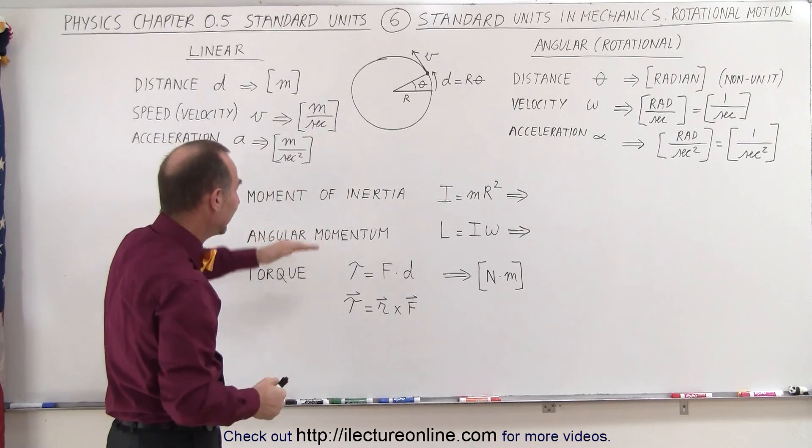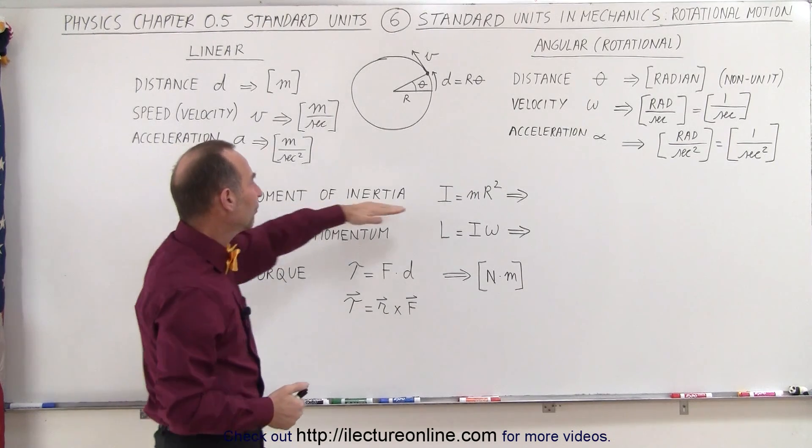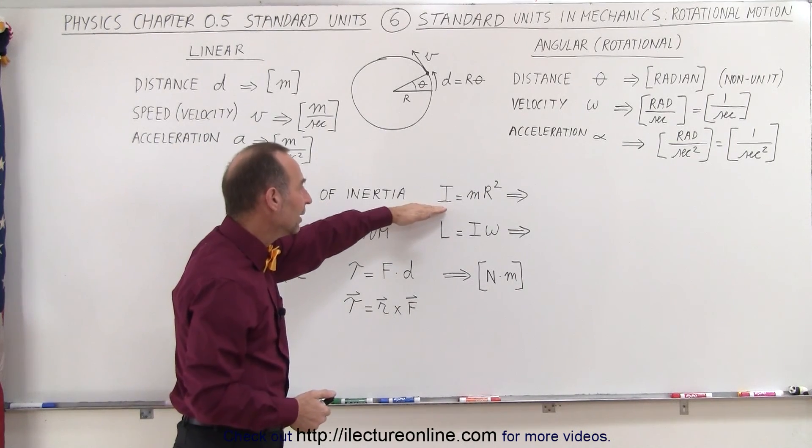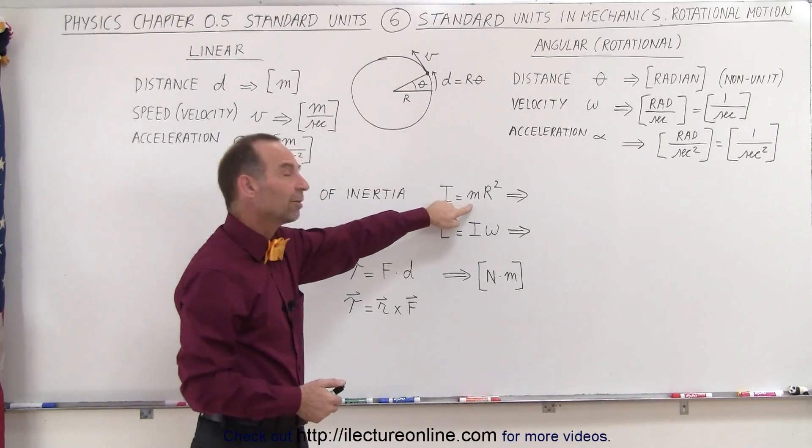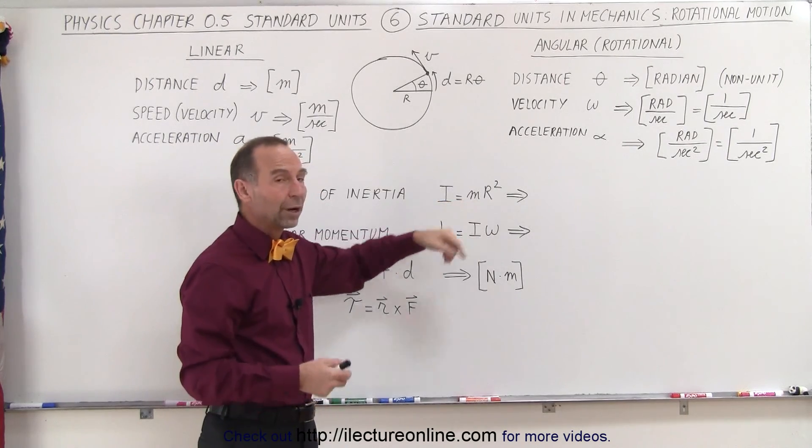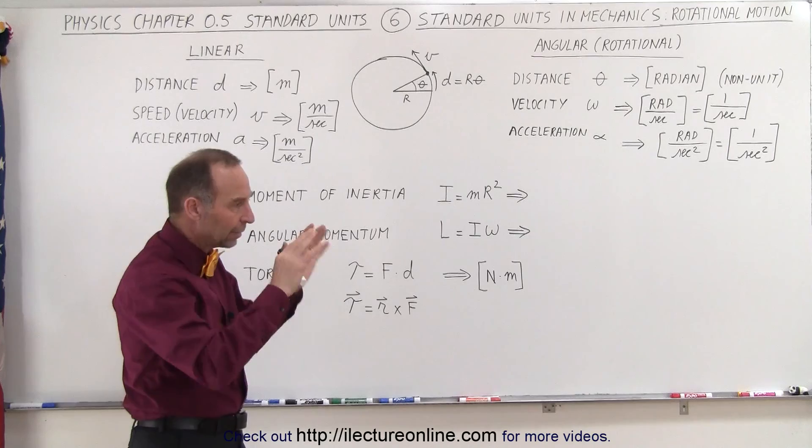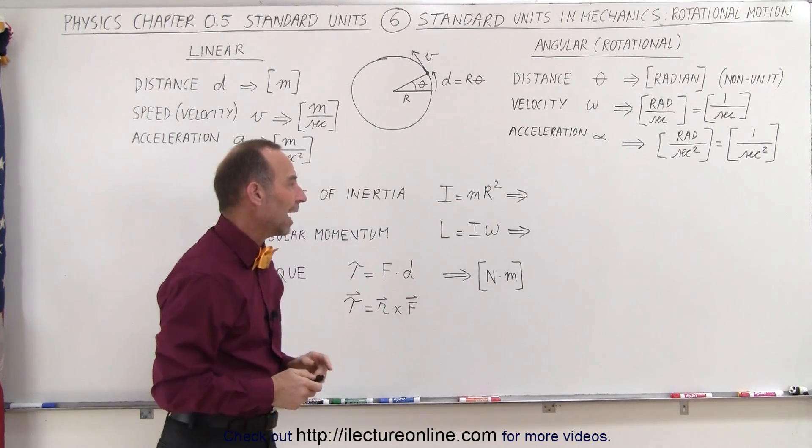In linear motion, you think of mass. In rotational motion, you think of moment of inertia I, which is equal to the product of the mass of the object times R squared, or depending upon how the mass is distributed, you may have a constant in front of that.